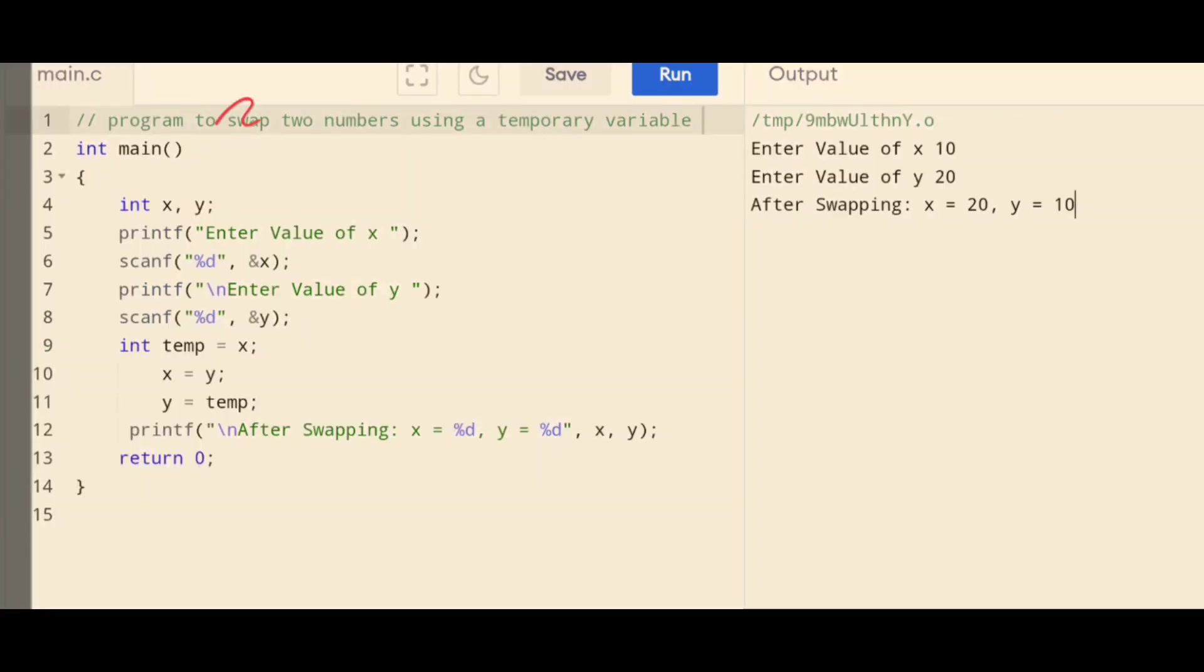Look at the first statement here. We have declared two variables here, x and y. This is the first statement. x and y are of integer data type. We are asking the user to enter the value for x. Printf, enter the value for x. That is how you will get this line here in the output. Whatever you are writing here in the printf, enter the value of x. This line is now appearing here.